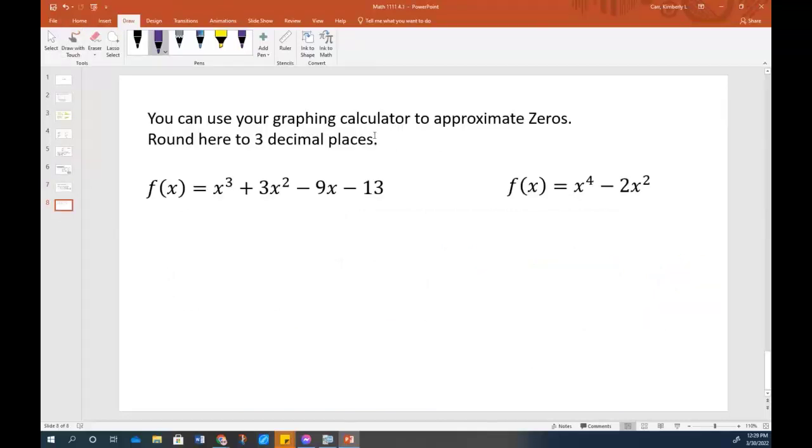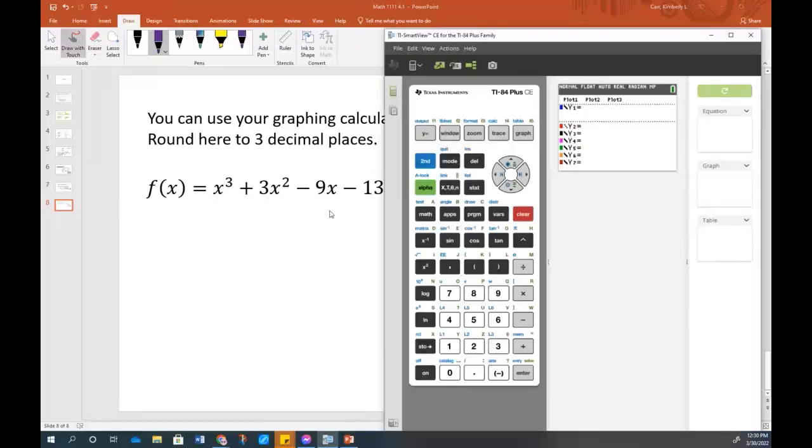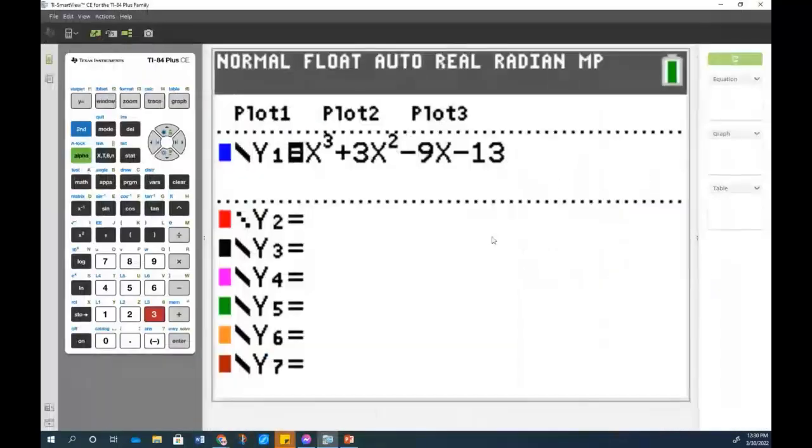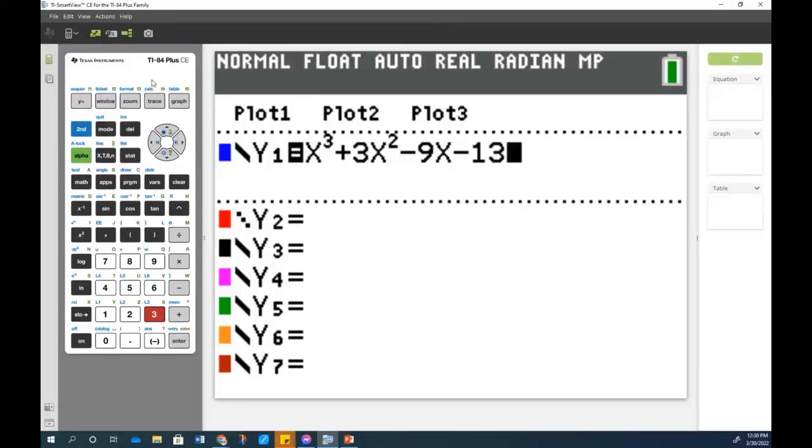You can use your graphing calculator to help you approximate the zeros. I'm going to type that in and then I'll make it bigger so that you can see the calculator a little bit better. So I have X to the third plus 3X squared minus 9X minus 13. How do we use our calculator to find the zeros, especially to decimal places? Because if I could hit graph, that's not going to really show you to decimal places where it is. Not yet.